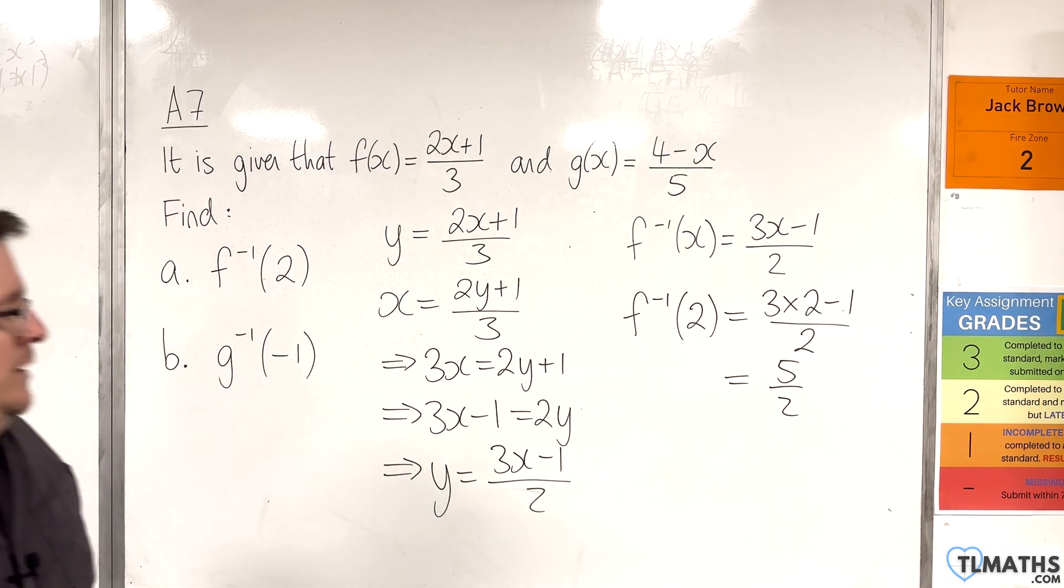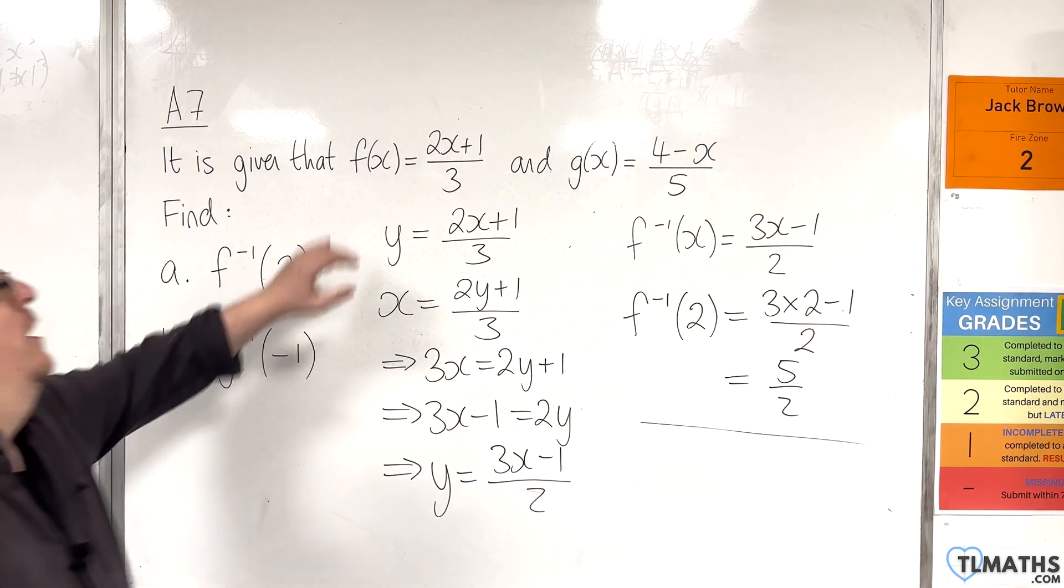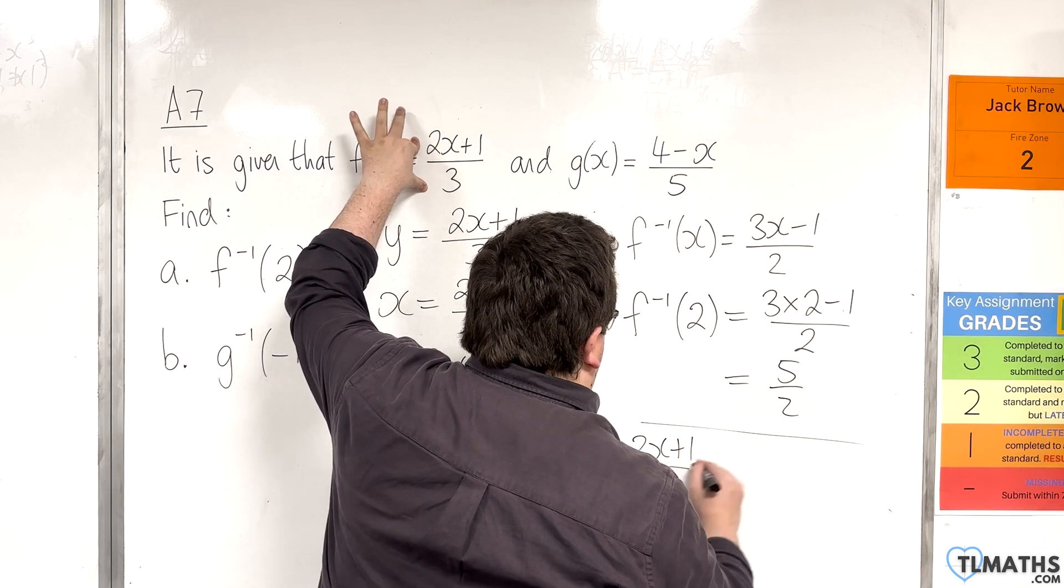So, in actual fact, we could have got to our answer by instead putting 2x plus 1 over 3 equal to 2.